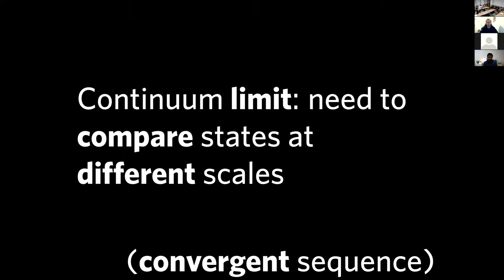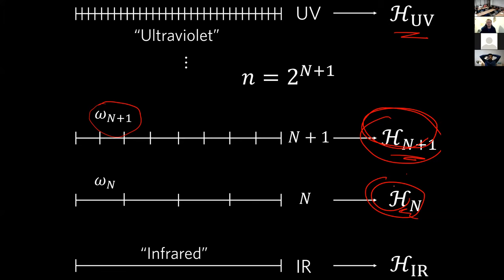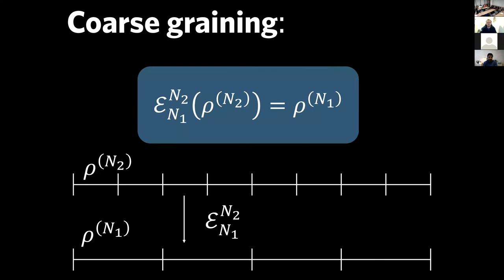Designing these maps is the bread and butter of what physics is about — there isn't a magical axiomatic approach, but we can say what properties we need. We're talking about maps on states — states are density operators — so we want physical maps: CP maps. We introduce the extra data of a coarse-graining: a way of taking a state on a finer lattice and producing a state on a coarser lattice, declaring physically that these represent the same system at different scales.